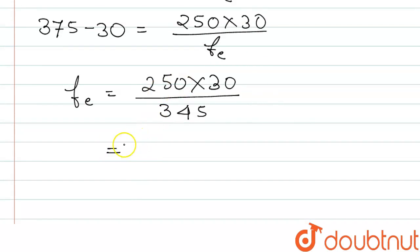If we solve this, we will get 7500 divided by 345, and this will be 21.73, which is approximately 22 millimeter. If we check the options...